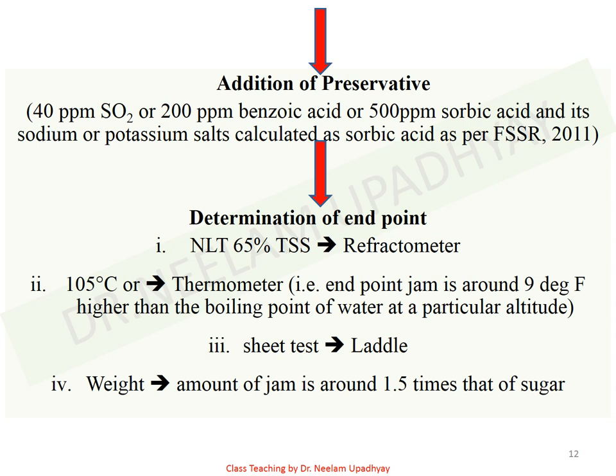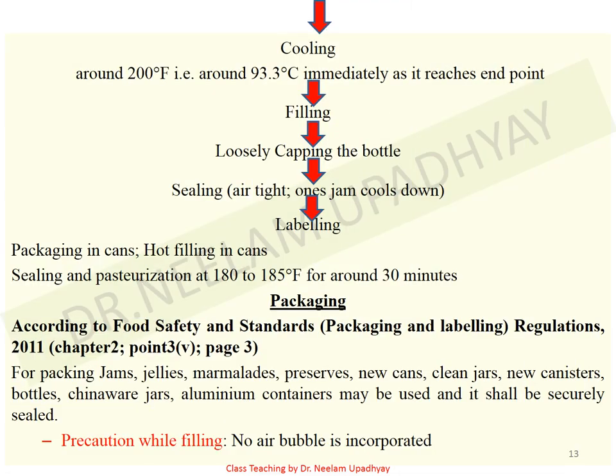Next step is packaging. As per the Food Safety and Standards (Packaging and Labeling) Regulations 2011, chapter 2.3 talks about packaging of jams, jellies, marmalades, and preserves. It should be done in new cans, clean jars, new canisters, bottles, chinaware jars, or aluminium containers, and these shall be securely sealed. Once jam is prepared, it has to be cooled down to 93.3 degrees Celsius or 200 degrees Fahrenheit immediately once the end point is reached.